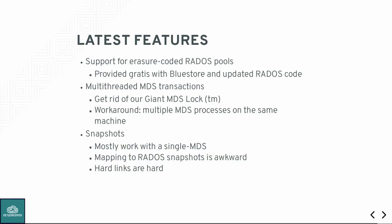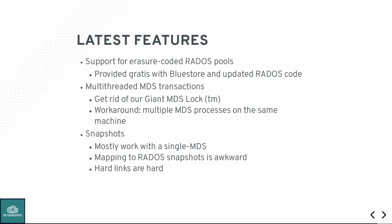We're working on multi-threading the MDS better. Right now it's programmed especially poorly — each MDS has one giant lock that prevents any operations from happening at the same time. You can just run two of them to get cheap parallelism, but we're working on finer-grained locking instead of our one Python-like giant lock. Snapshots mostly work now, but don't hardlink any files after you take one — that's not a good idea yet, especially if you have more than one MDS. Hardlinks are really hard and I wish we didn't support them.